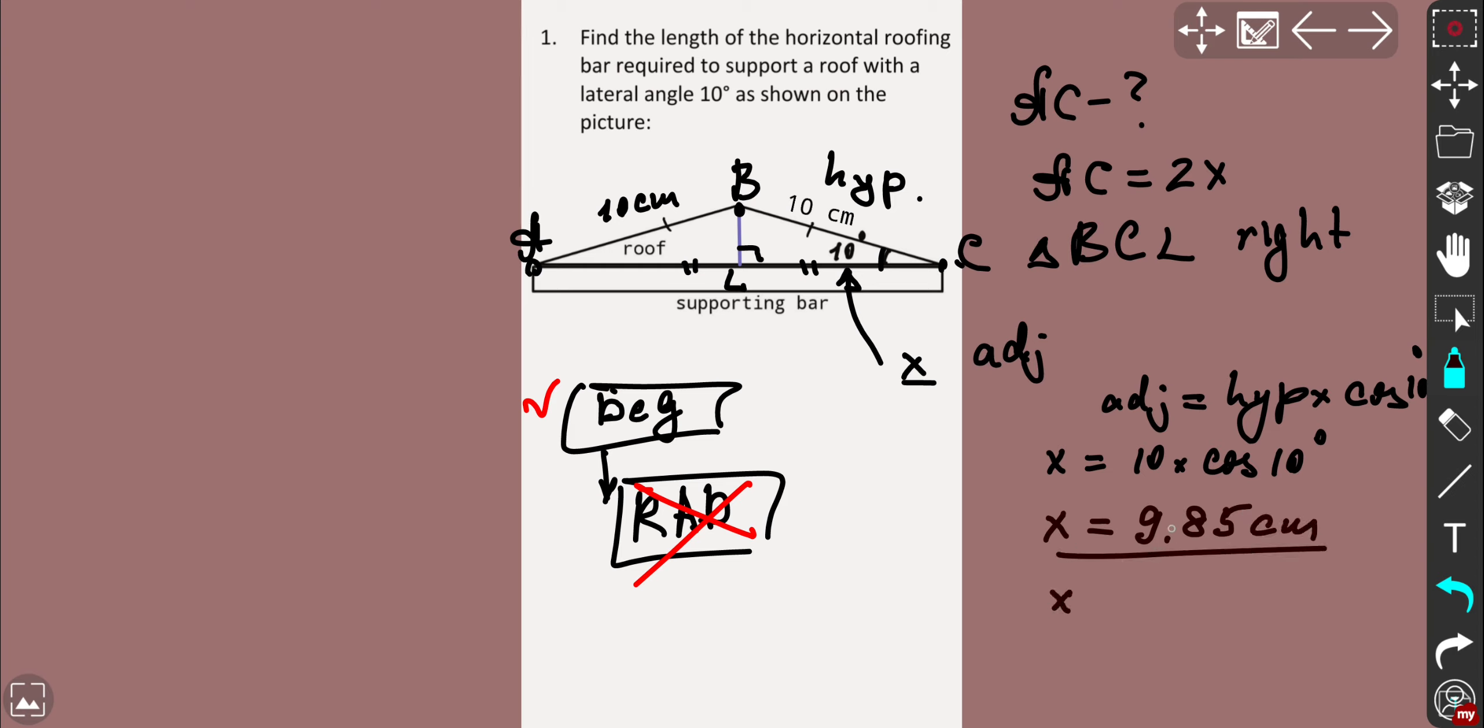Here is the check: the x adjacent leg or opposite leg in comparison with hypotenuse is going to be less than hypotenuse. So in this case 9.85 centimeters is less than 10 centimeters, so that's okay. So the test has been passed. We've got that, it was pretty easy.